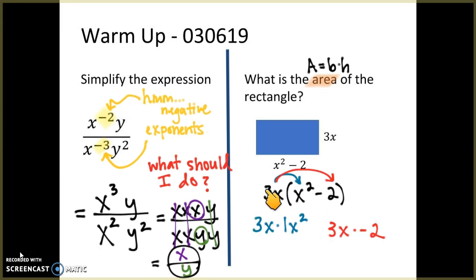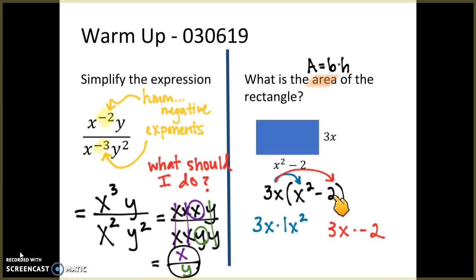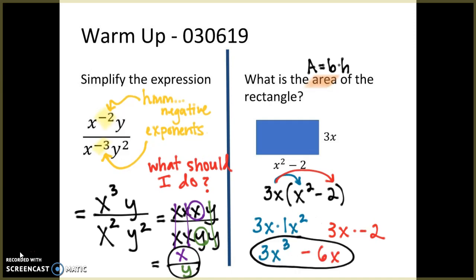I can show that distribution here with these arrows — 3x times x squared, I can write it as 3x times 1x squared. I can also show the distribution with the red arrow to the negative 2: 3x times negative 2. Then we simplify: 3 times 1 is 3, and x times x squared is x cubed. Then 3 times negative 2 is negative 6, so I write minus 6 and bring the x along.